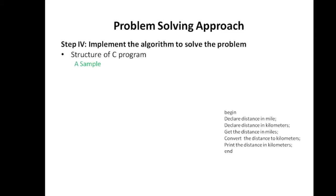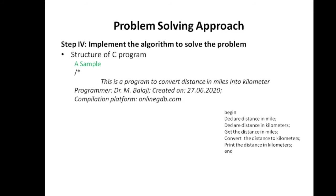Here is the code. I am writing the comment section for the program. This program is about converting distance in miles into kilometers. Other lines in the comment section include the name of the programmer, when the program was created, and the compilation platform used. I have used the online site gdp.com — you can use this website to create and play with all your programs. Now I close the comment section — this is the first part of the C program.